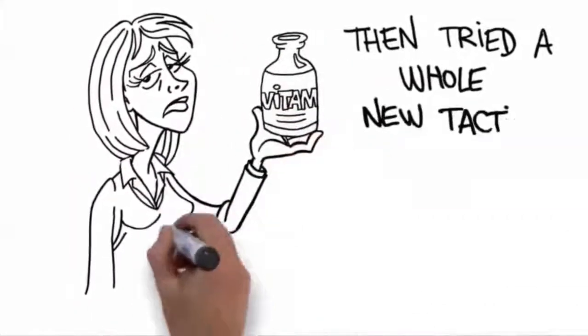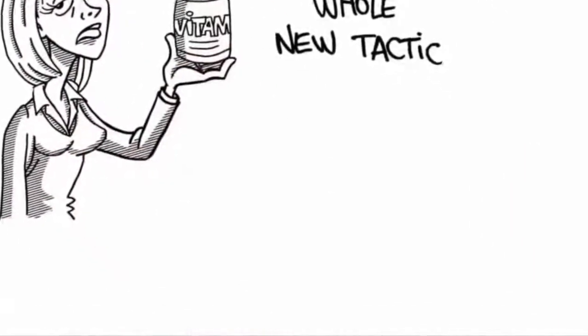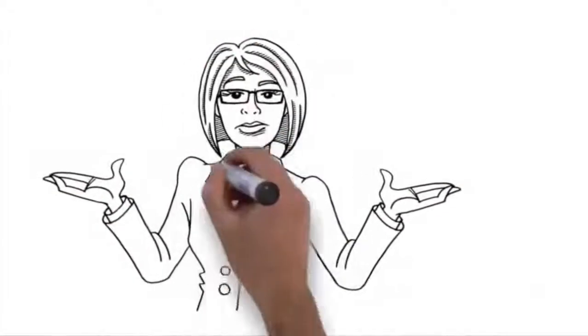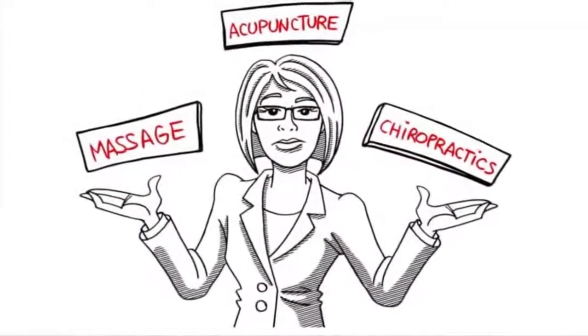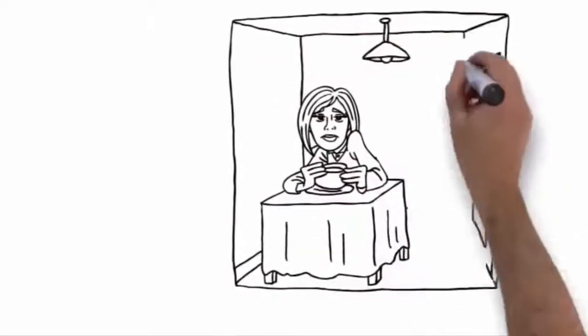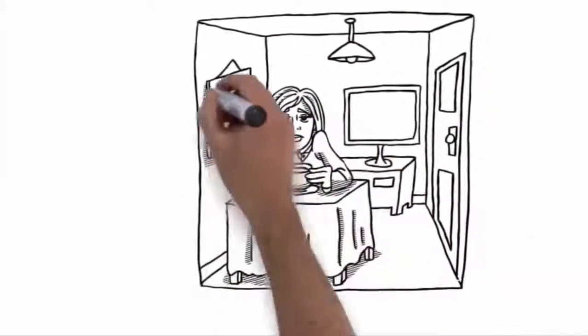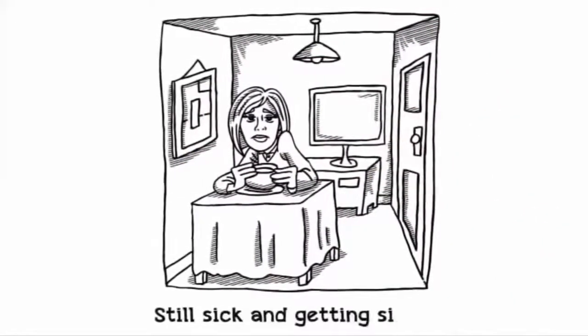Fed up with traditional methods, I then tried a whole new tactic. I changed my diet and began ingesting vitamin supplements like candy. If I read somewhere that it might fix one of my many medical complaints, I'd add it to my repertoire. I even tried massage, acupuncture, and chiropractics, hoping that something would ease my suffering. By the time I added up all of the expenses, I had spent enough to have purchased my first home. Yet, I remained cooped up in a small apartment because I couldn't afford anything better. Worse still, I was still sick and getting sicker.